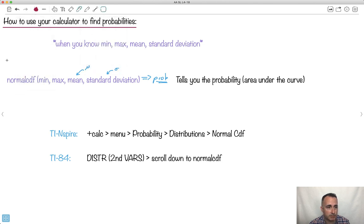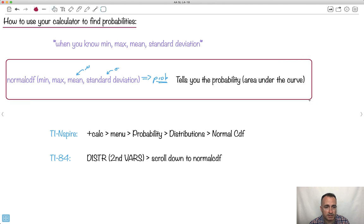We always use CDF for normal. For binomial we have binomial PDF and CDF, but for normal distributions we're just going to use normal CDF. It depends if you use a TI-Nspire or the 84, but you get to it in the same place where we got the binomial distributions. We go to probability and distributions and normal CDF, or we go to distributions and scroll down to find it.